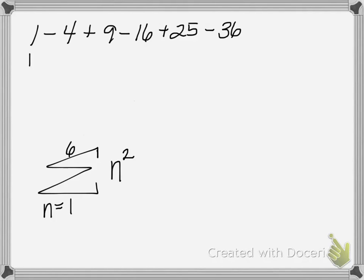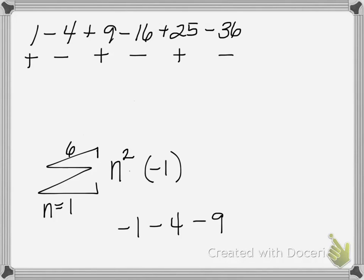We need to ensure the first term is positive, the second is negative, the third is positive, the fourth is negative, and so on. The only way to alternate signs is to use negative 1 raised to a power — we need to multiply by negative 1 raised to some power. If we just multiplied by negative 1, every term would be negative: plugging in 1 gives negative 1, plugging in 2 gives negative 4, plugging in 3 gives negative 9. Every term becomes negative.